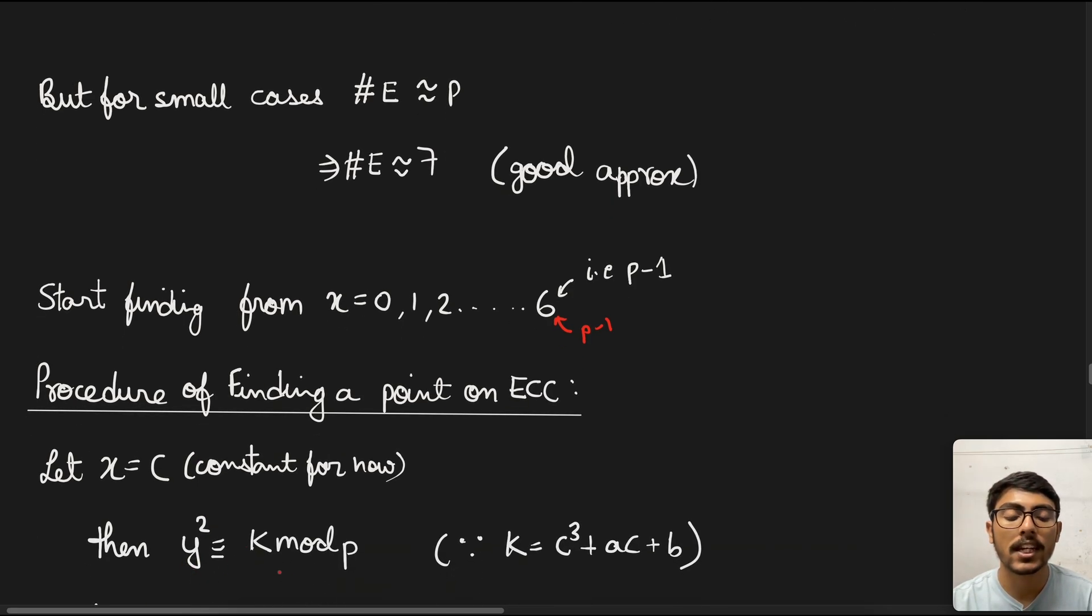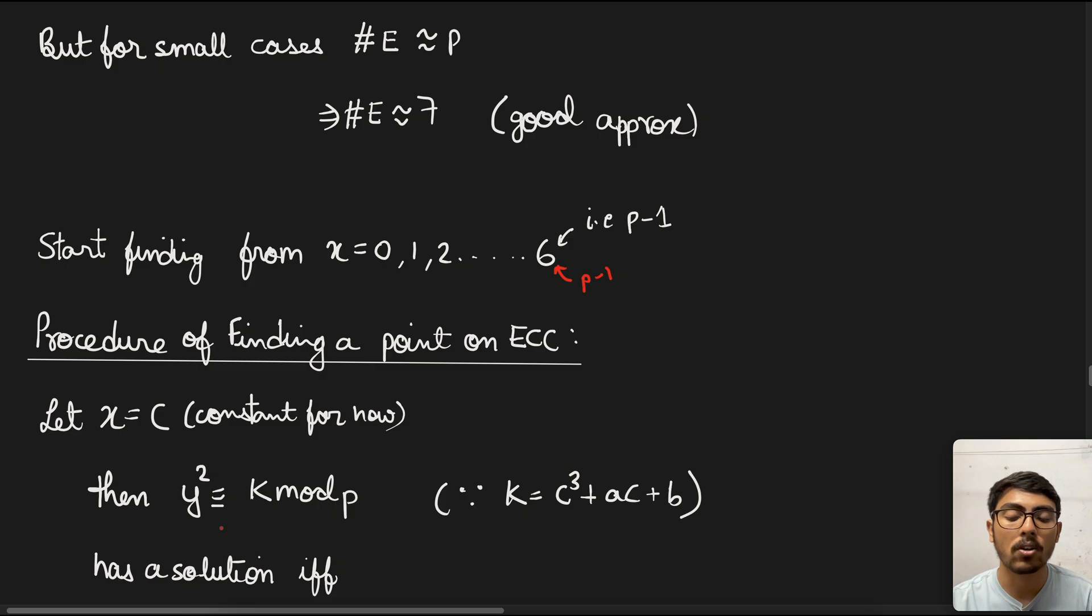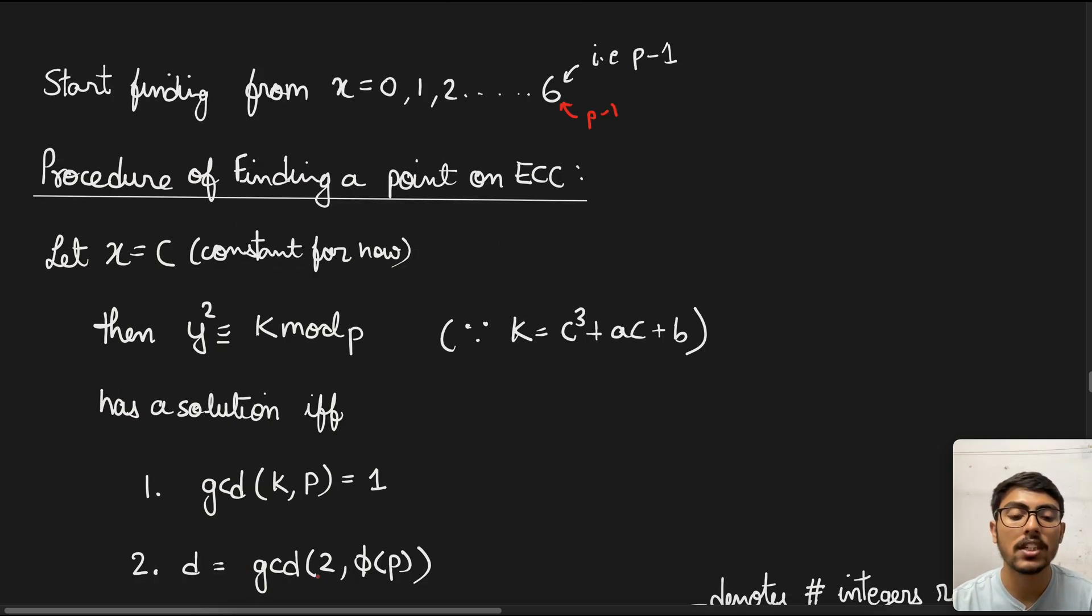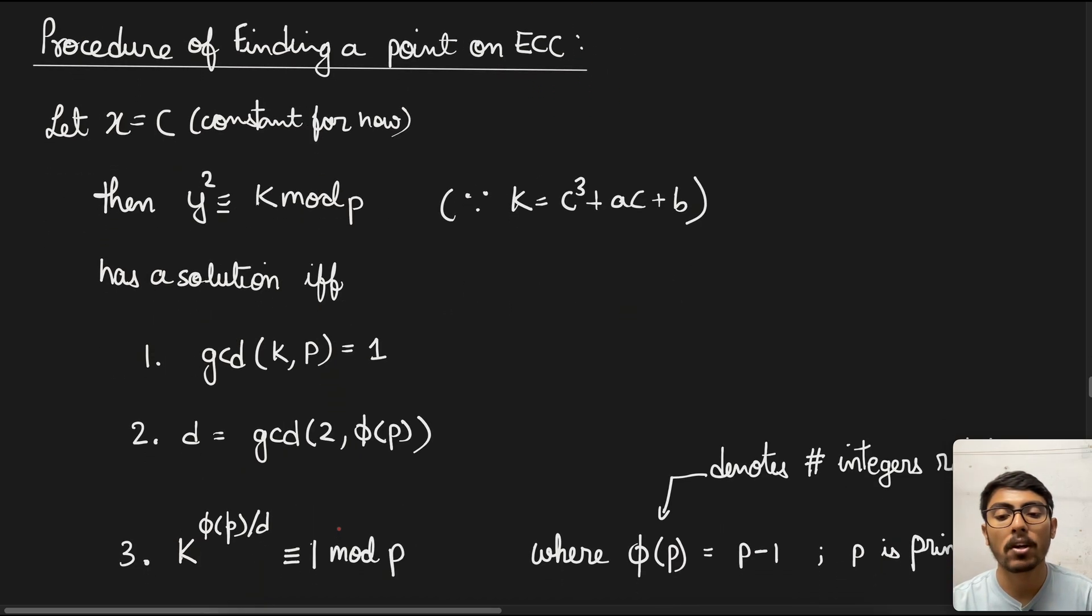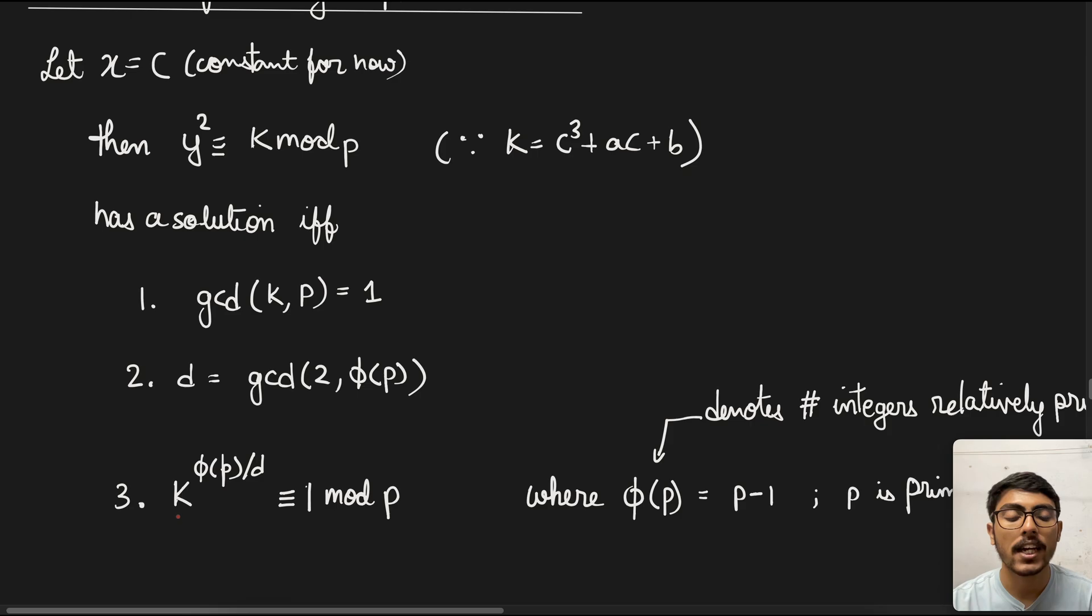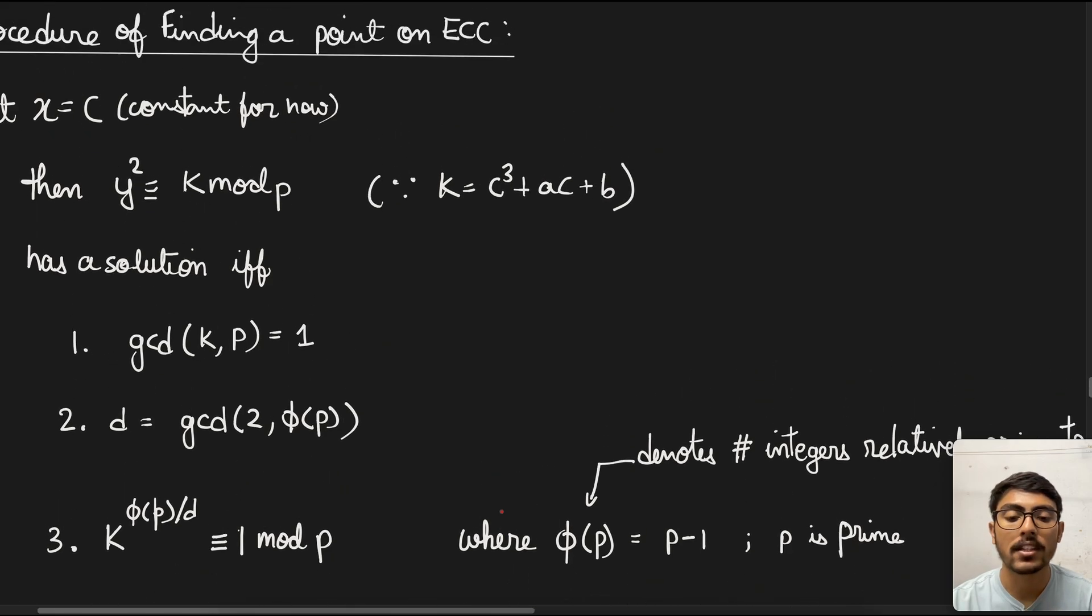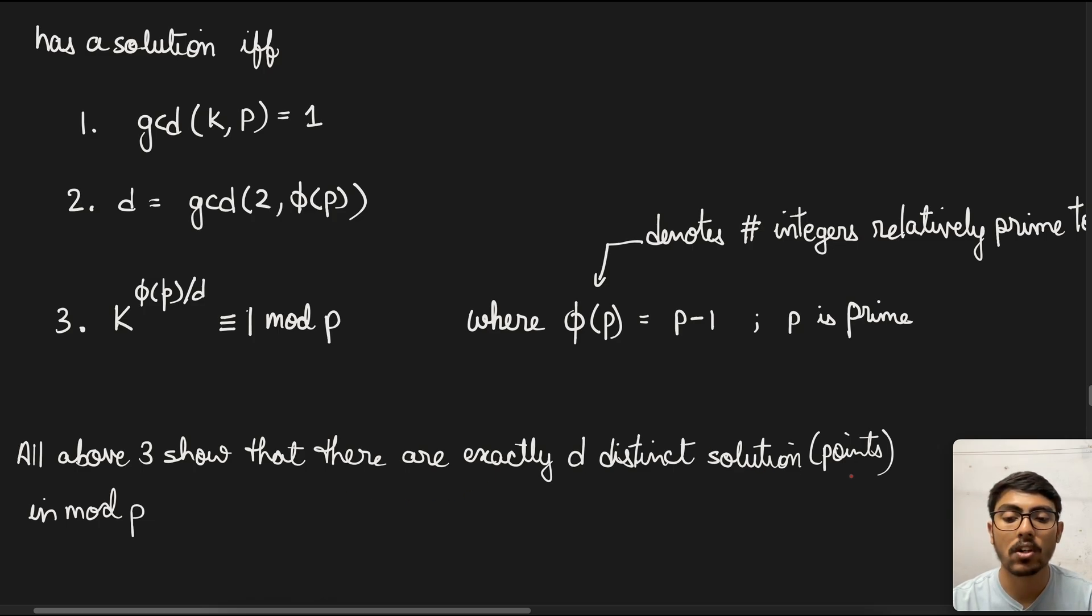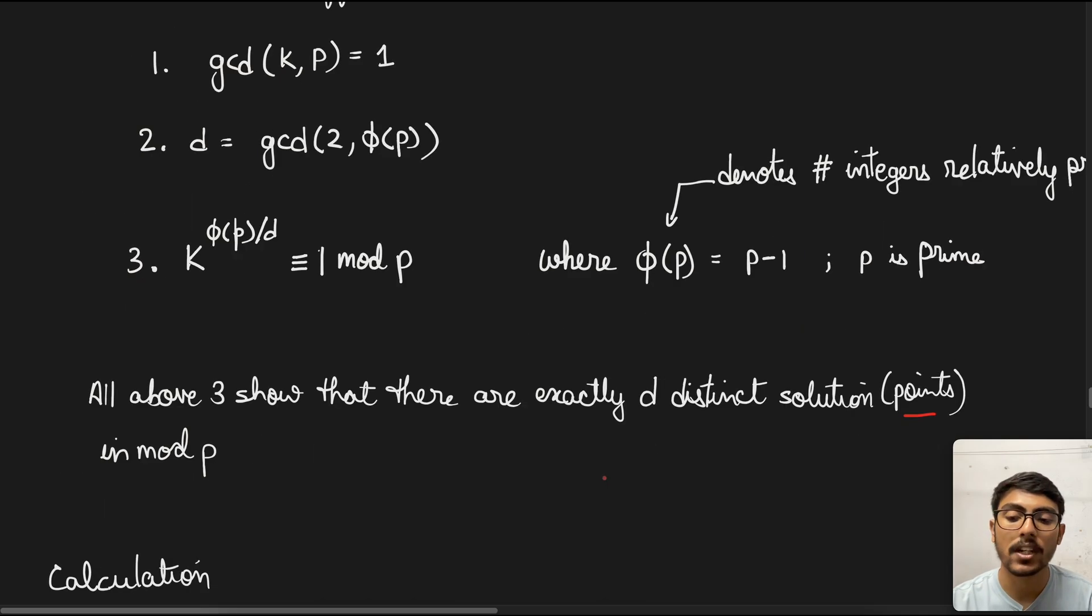Let x = c, which is constant for this conceptual part. Then y² ≡ k mod p. As you can guess, k is another constant equal to c³ + ac + b. This congruence relation will have a solution if and only if: (1) gcd(k, p) = 1, (2) d = gcd(2, φp) where φp denotes the number of integers relatively prime to p, and (3) k^(φp/d) ≡ 1 mod p. If p is prime, then φp = p - 1. All the above show there are exactly d distinct solutions or points in mod p.